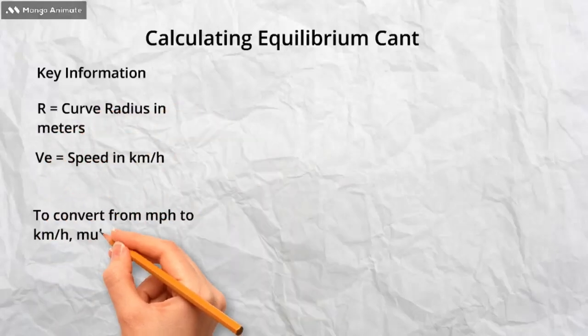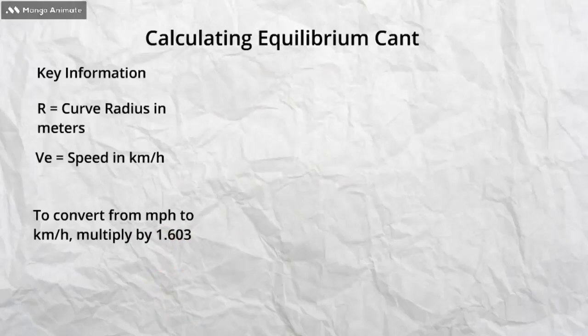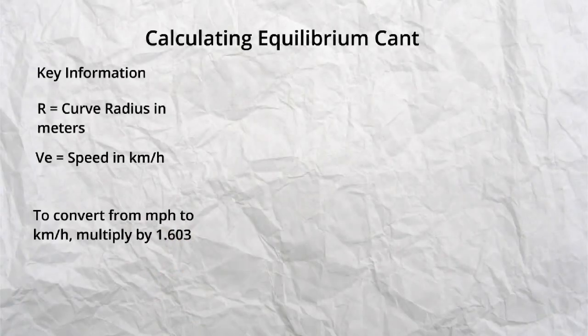We need to know the speed, most often the maximum speed permitted, in kilometers per hour. This will be known as VE. In the UK, the speed will often be stated in miles per hour as standard. We need to convert this to kilometers per hour for this calculation. To do this we multiply our mile per hour value by 1.603.